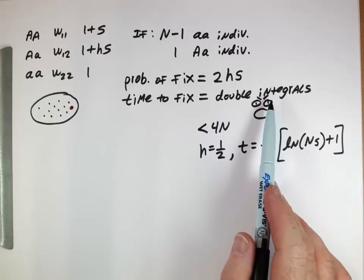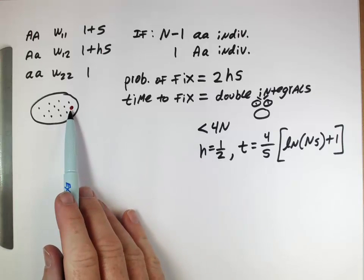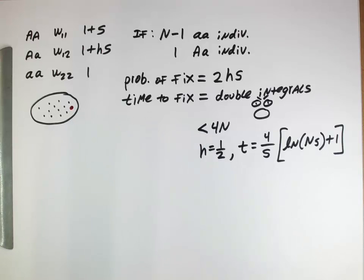But the main thing here is it's very complicated, but it's faster. That allele, if it fixes, fixes more quickly than a neutral allele, and that makes sense, because selection should be pushing things along.